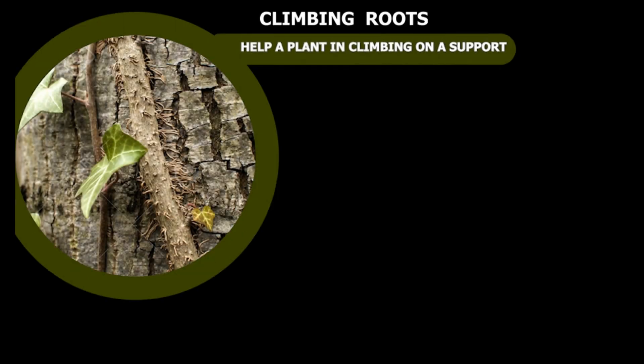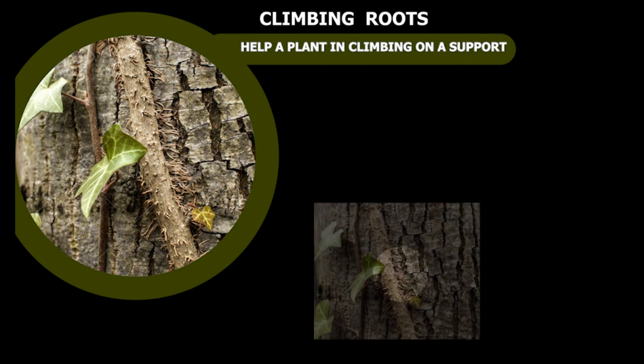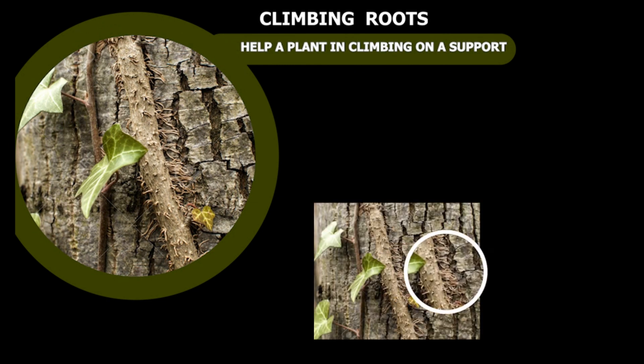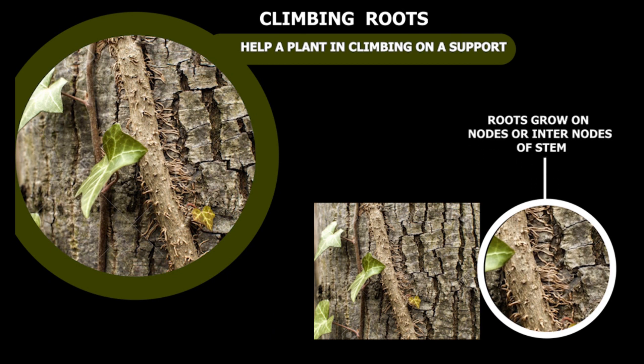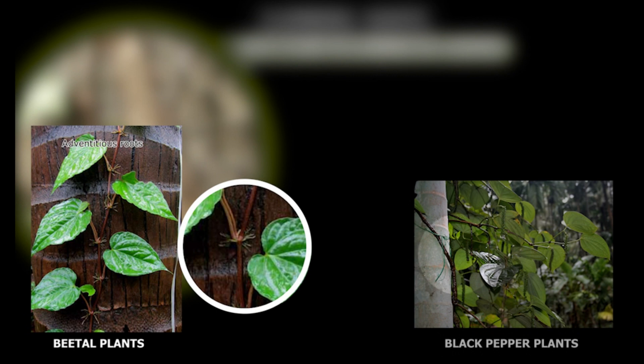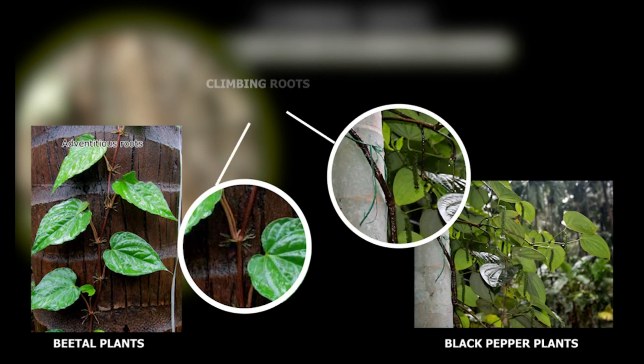As the name suggests, climbing roots help a plant in climbing on a support. These roots grow on nodes or inter-nodes of the stem. Betel and black pepper plants climb on support using climbing roots.